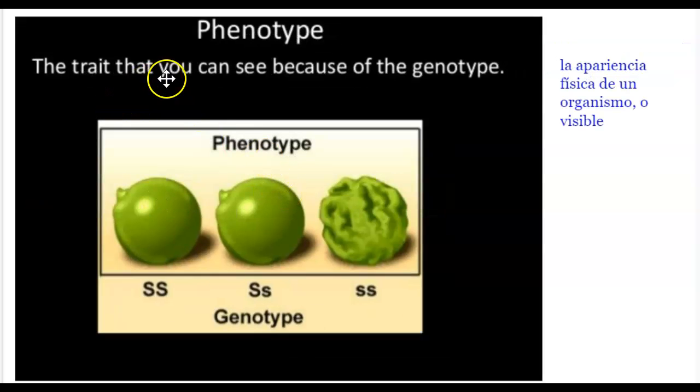Phenotype. The trait that you can see because of the genotype. We like to think of the letter P because it means physical, what you see physically, visible. Phenotype. These are peas, chicharrones. This is a smooth pea, smooth pea, wrinkled pea.